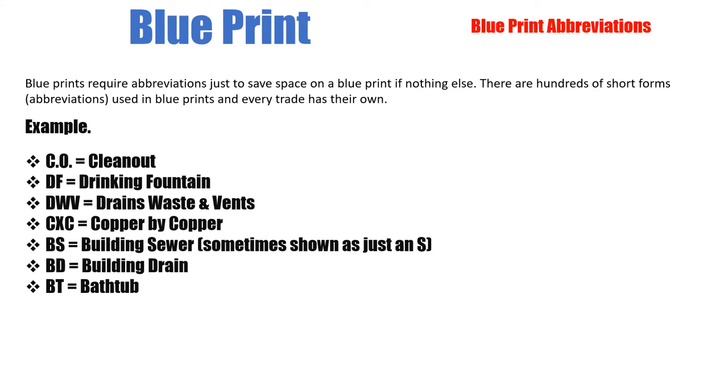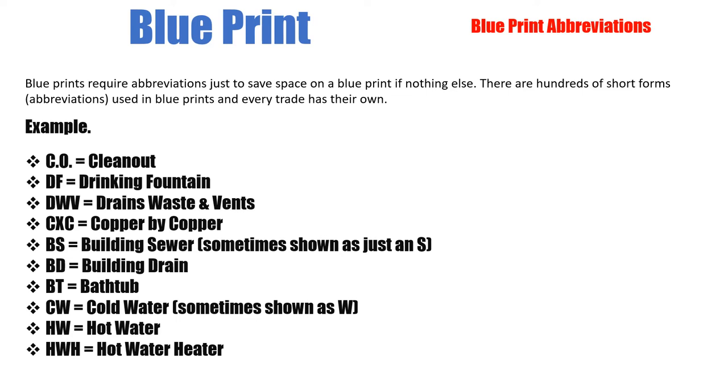BT is the bathtub. CW is cold water, which sometimes is just shown as a W. HW is the hot water, and HWH is hot water heater.